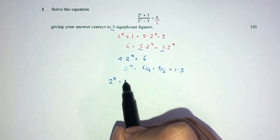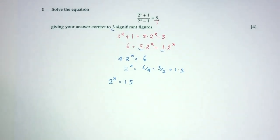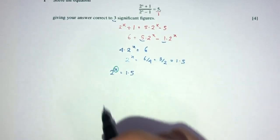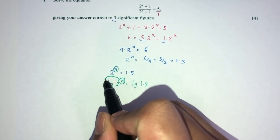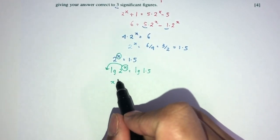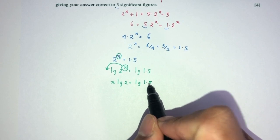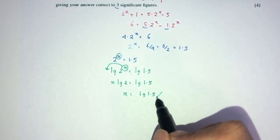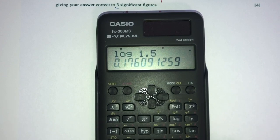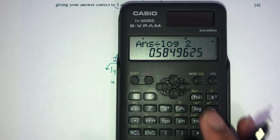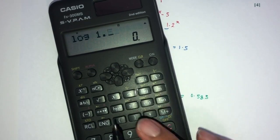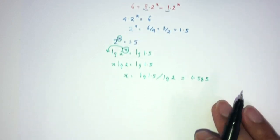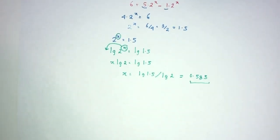Now we have 2 to the power x equal to 1.5. As you can see, x is a power here — it's on top. So we want to bring this down. To bring this down, I'll apply log on both sides — log of this, log of that. Now I can bring this down. So you have x times log of 2 equal to log of 1.5. So x will be log of 1.5 divided by log of 2. That should be 0.585, correct to 3 significant figures. Double check: log of 1.5 divided by log of 2 — yep, exactly. So 0.585 for your answer, correct to 3SF for your value of x.